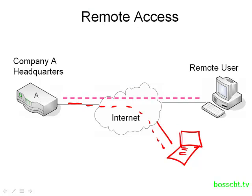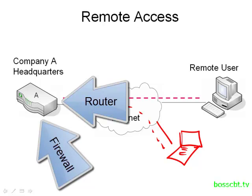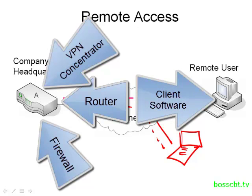Depending on the scenario, we can deploy a certain type of VPN, and we can also use different types of equipment to build them. At company A headquarters, a router could be used to configure the VPN. We can also do it on a firewall — if you have a PIX or the newer ASAs, those can also be used. There's also something called a VPN concentrator, which is a dedicated piece of hardware used solely for establishing VPNs. Finally, there's VPN client software — installed on laptops or remote user desktops — used to establish the VPN back to headquarters, which could have a router or any of those other devices on the other end.